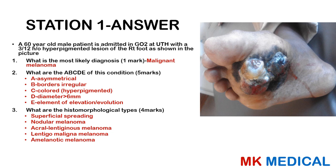Remember the ABCDEs: A is for asymmetry, B is for irregular borders, C is for colour — hyperpigmented, D is for diameter greater than 6 millimetres, E is for elevation and also an evolving lesion. The subtypes are superficial spreading, nodular melanoma, acrolentiginous melanoma — which is probably what this man has — lentigo maligna melanoma, and amelanotic melanoma.